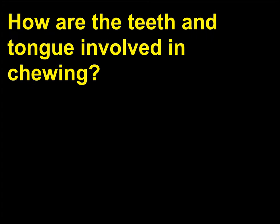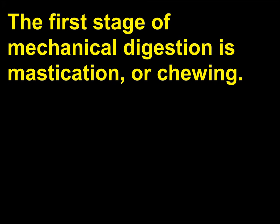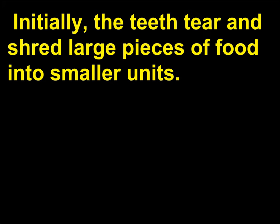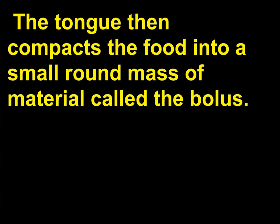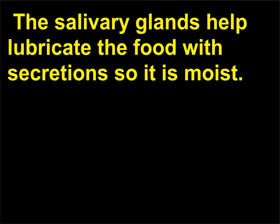How are the teeth and tongue involved in chewing? The first stage of mechanical digestion is mastication, or chewing. Initially, the teeth tear and shred large pieces of food into smaller units. The muscles of the tongue, cheeks, and lips help keep the food on the surfaces of the teeth. The tongue then compacts the food into a small round mass of material called the bolus. The salivary glands help lubricate the food with secretions so it is moist.